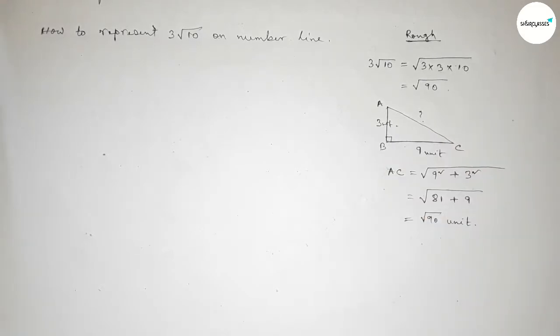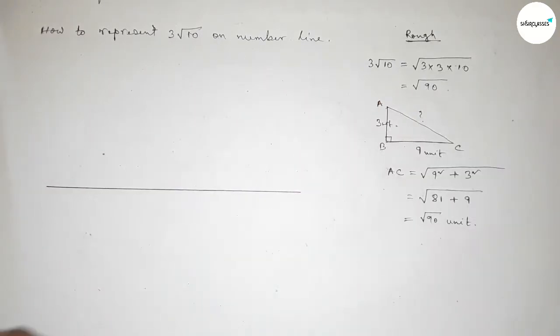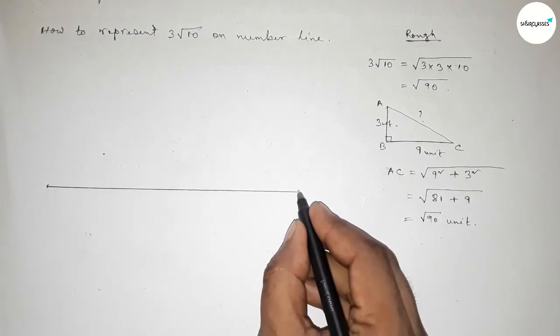So adding this, so this is total 90 unit. So now first we have to draw a number line.